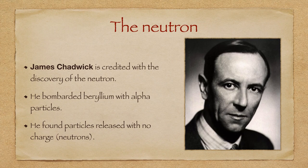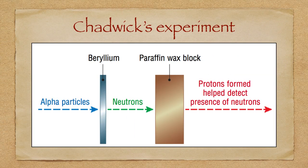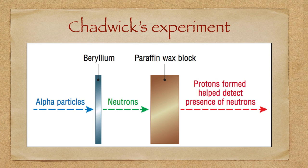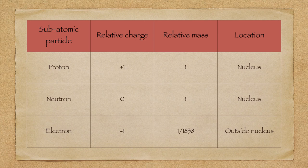James Chadwick, a student of Rutherford, is credited with the discovery of the neutron. The neutron was last to be discovered because it had no charge, making it the most difficult to detect. Chadwick performed a very similar experiment to Rutherford, except he used beryllium instead of gold. Behind the beryllium was a paraffin wax block. The alpha particles knocked neutrons out of the beryllium, which then caused the neutrons to knock protons out of the paraffin block. You need to know the charges and locations of the subatomic particles, as well as their relative masses.